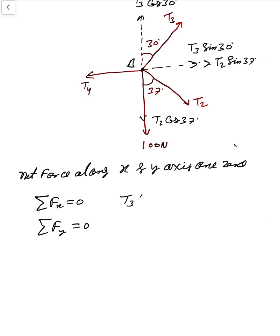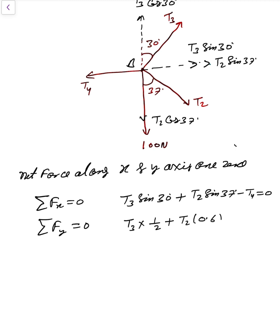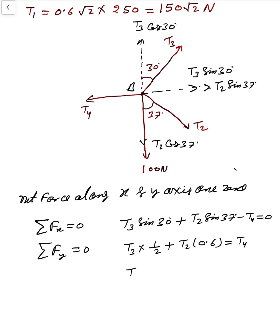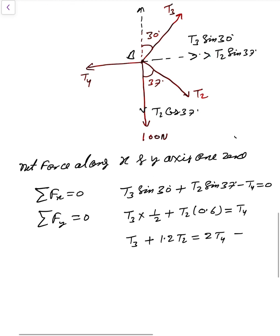In the X direction: T3 sin 30° + T2 sin 37° minus T4 = 0. Substituting sin 30° = 0.5 and T2 sin 37° = 250 × 0.6 = 150: so T3/2 + 150 = T4. This is equation 3.